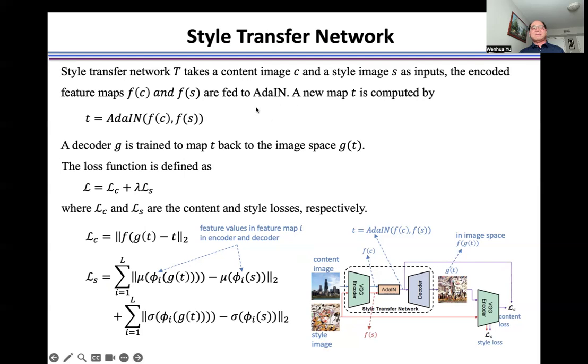The new map t is computed by AdaIN. Decoder g is trained to map t back to image space, producing g(t).